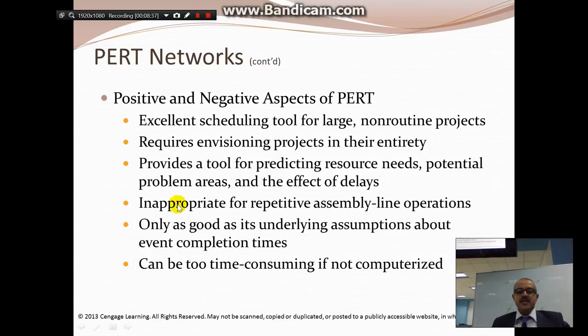It's inappropriate for repetitive assembly line operations. If it's an assembly line repetitive in a straight line, there's no need. But since we have this network where different parts come to the same point G, here it becomes more needed. It's only as good as its underlying assumptions about event completion times. If you make good numbers, good results. If you don't make good numbers, you don't get good results. It can be too time-consuming if not computerized. Many companies will computerize this so they know exactly how long it will take.